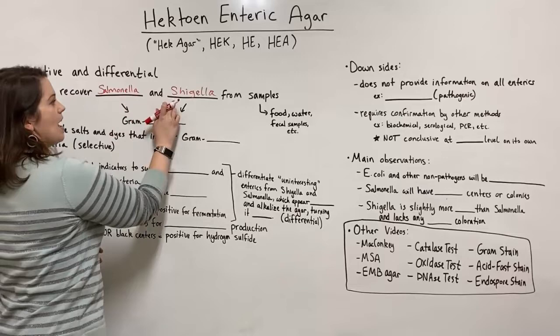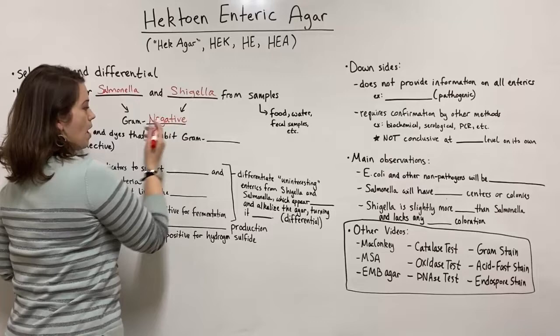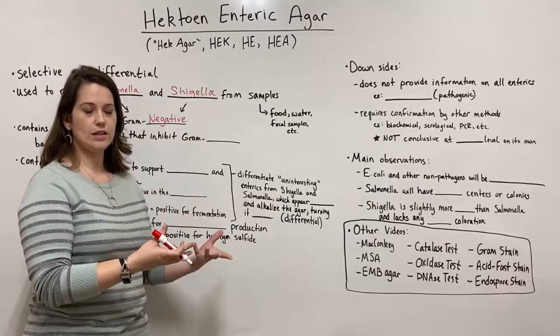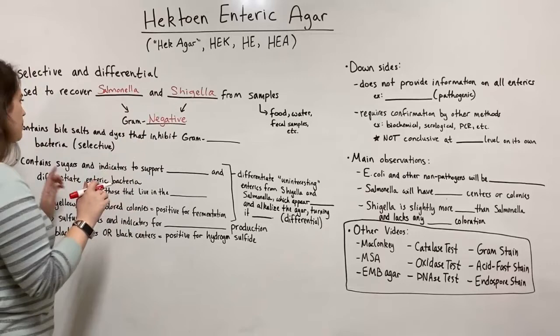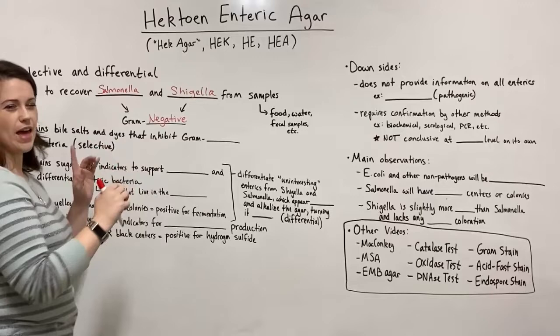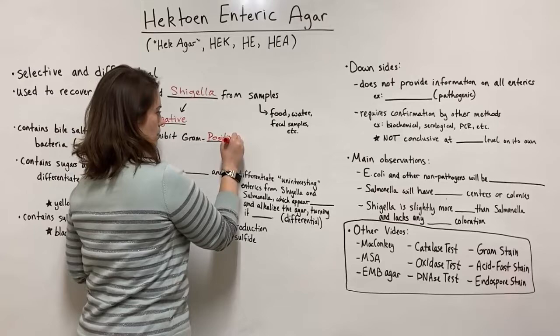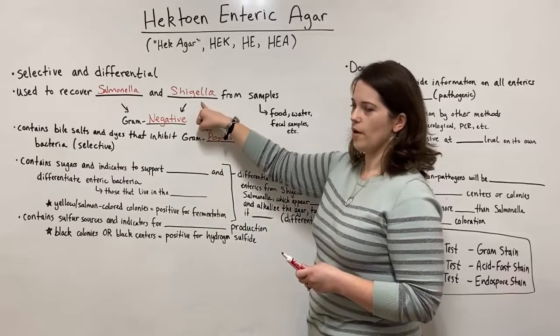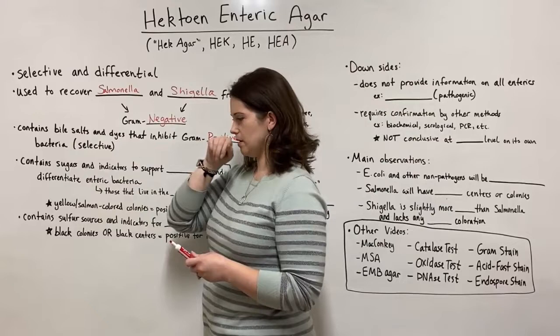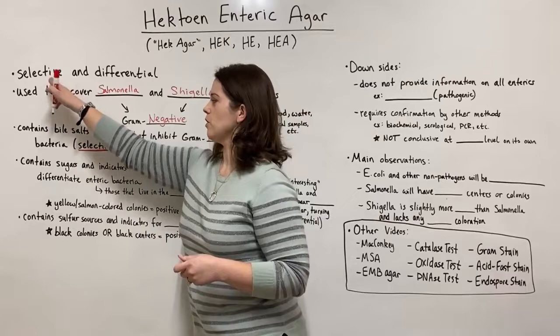Salmonella and Shigella are both gram negative. HEC agar contains bile salts and dyes that inhibit the other gram type — gram positive bacteria. These bile salts and dyes are present in many agars that are trying to select for gram negative cells and inhibit gram positive cells. This is where the selectivity comes in: it selects for gram negative bacteria and against gram positive bacteria.